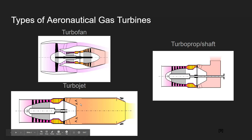We don't always have to accelerate the exhaust jet for thrust. We can also extract as much work as possible from the exhaust gases using a turbine connected to a shaft — for example, to drive a propeller. This is the turboprop configuration, where all energy from the hot exhaust gases drives a long shaft connected to a gearbox and then a propeller. There is also the turboshaft, used in helicopters, where the gas turbine is installed horizontally and power direction is changed 90 degrees to drive the vertical shaft of the helicopter main rotor.